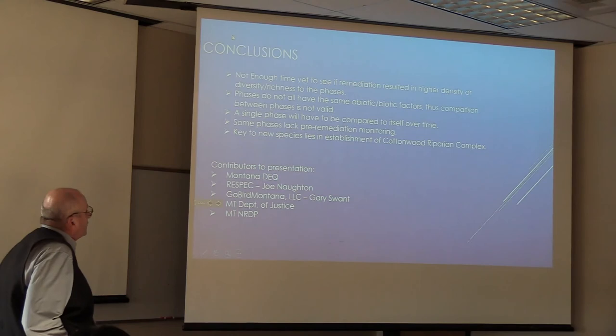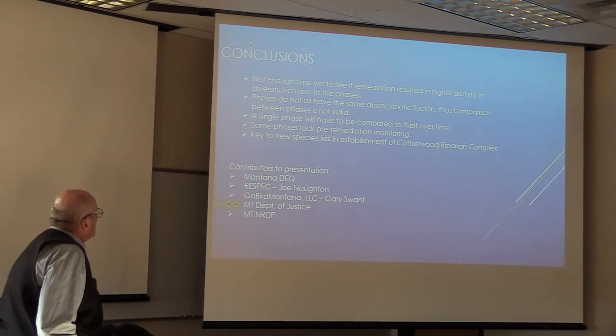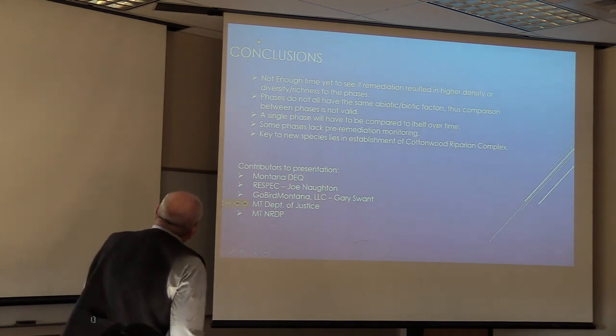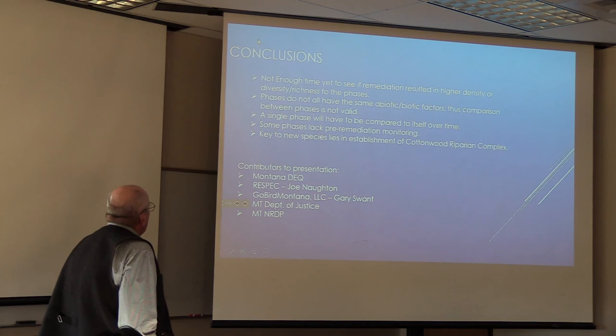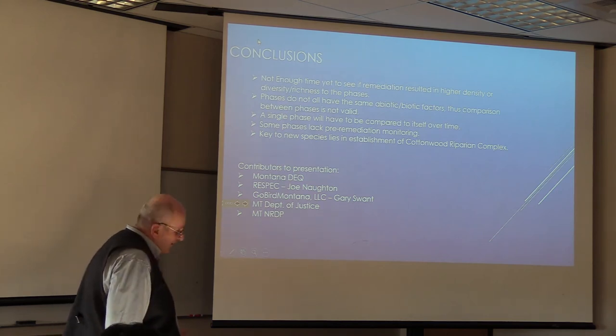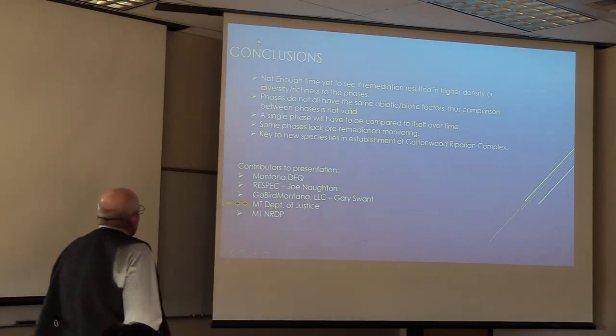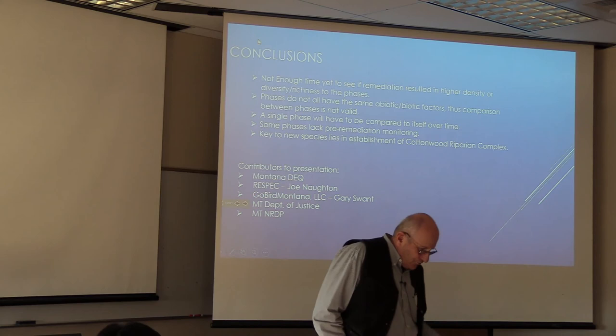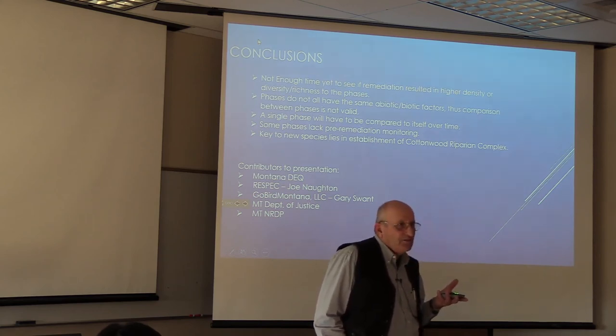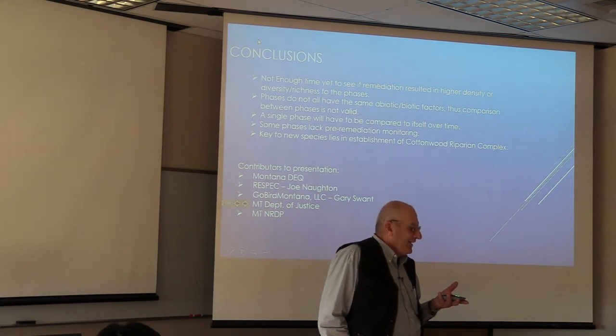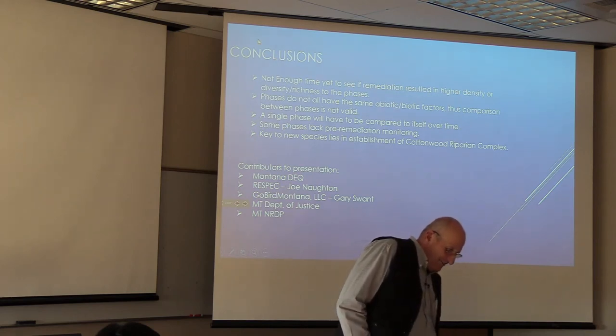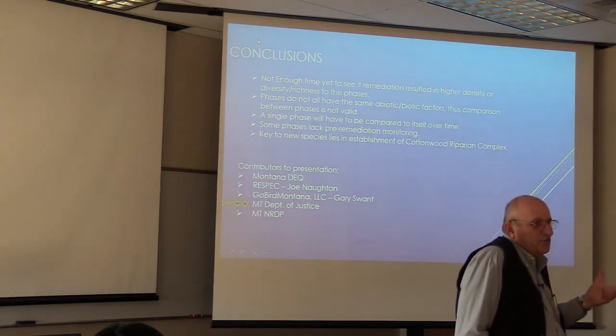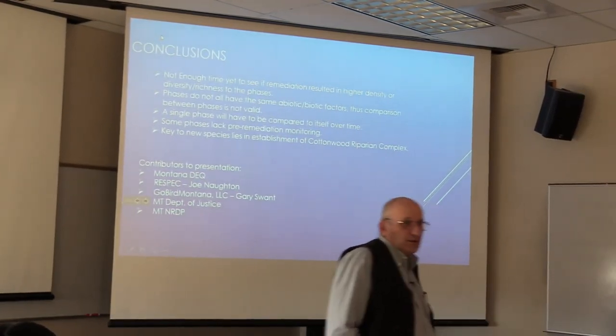So the conclusions I have. Not enough time yet to see if remediation resulted in higher densities or diversity or richness to the phases. Phases do not all have the same abiotic-biotic factors. Thus comparison between phases is not valid. A single phase will have to be compared to itself over time. Some phases lack pre-remediation monitoring. And that's so it's going to be tough to say anything about those. And the key to new species lies in the establishment of a cottonwood riparian complex, in my opinion. And how old does a cottonwood tree have to be before there is an avian response? I don't know. And this is the first time I've ever given this presentation. And the funny thing that's going on in my mind is I'm generating all kinds of questions that I never thought about before, simply because the data doesn't draw any conclusions yet. So let's open it up to questions. We have a few minutes. Thank you.